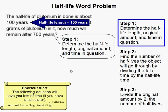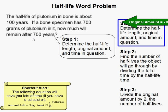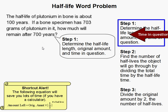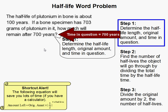We're given that the half-life of plutonium in bone is 100 years. We're given the original amount, which is 703 grams, and the time in question is 700 years.